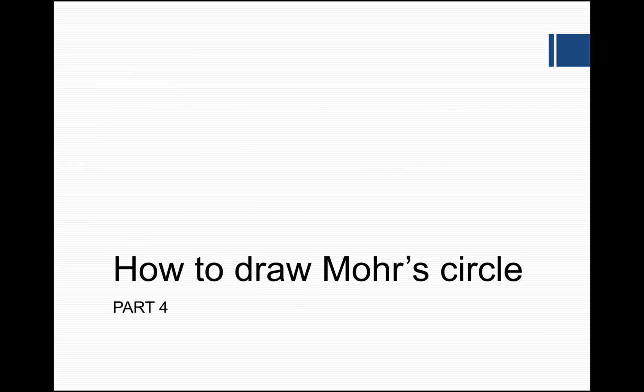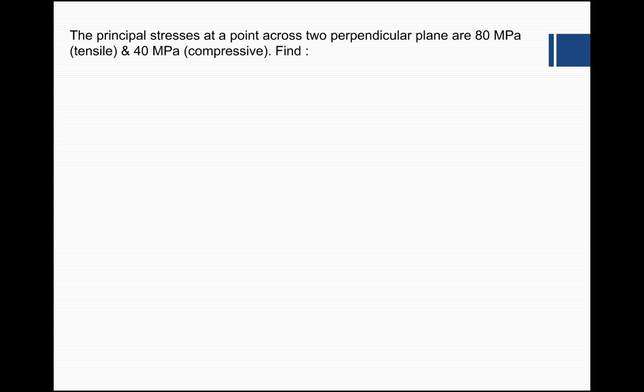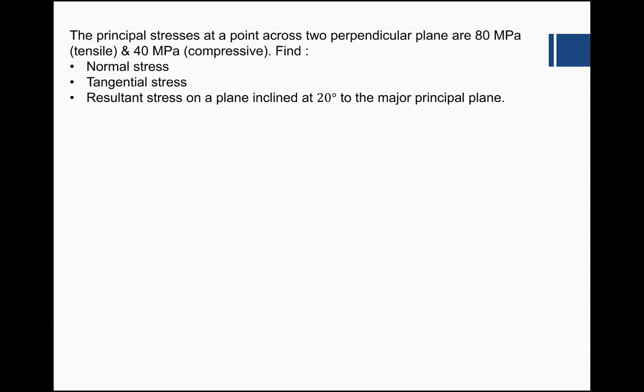In this video we will try to understand how to draw Mohr's circle and how to find out the normal stress, tangential stress, and resultant stress in case of a biaxial stress system. The problem statement: the principal stresses at a point across two perpendicular planes are 80 MPa tensile and 40 MPa compressive, and we have to find the normal stress, tangential stress, and resultant stress on a plane inclined at 20 degrees to the major principal plane.